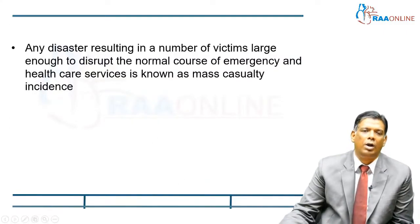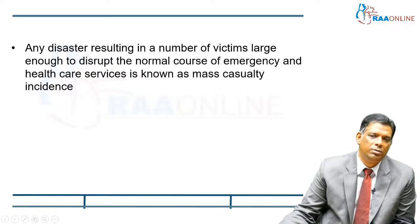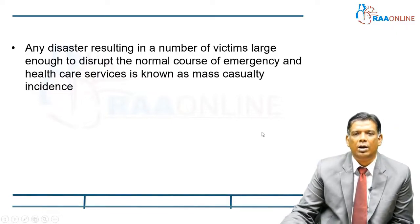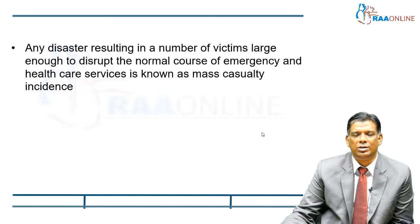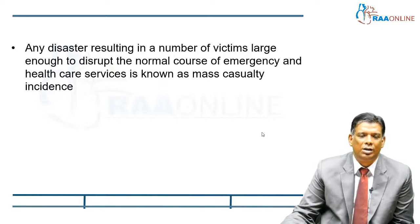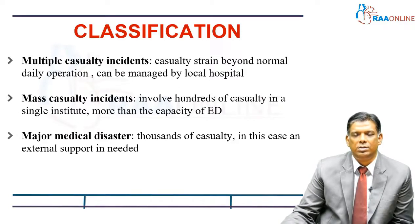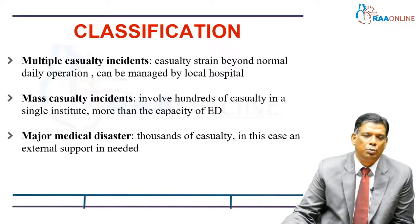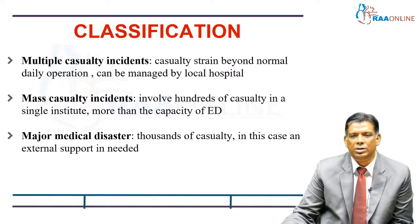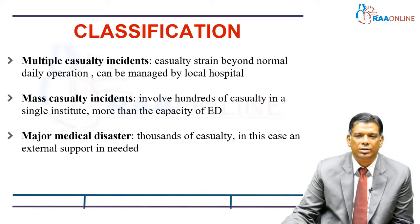Any disaster resulting in a number of victims large enough to disrupt the normal course of an emergency system is known as a mass casualty incident. To further classify this, there are three terms that we use: multiple casualty incidents, mass casualty incidents, and major medical disaster.